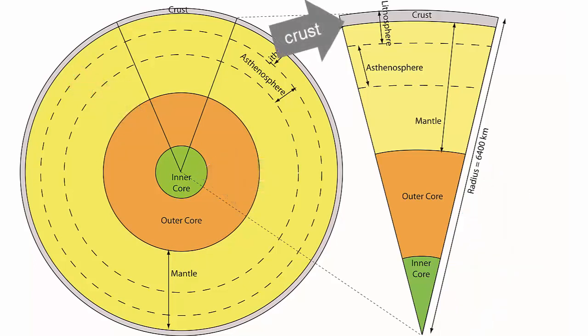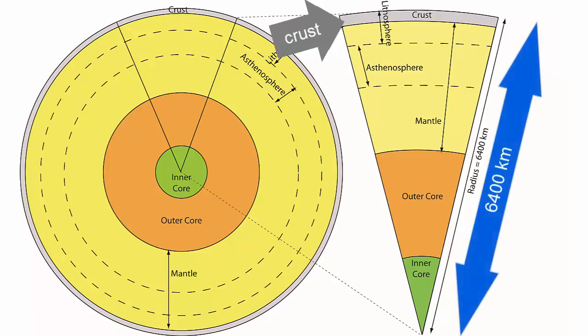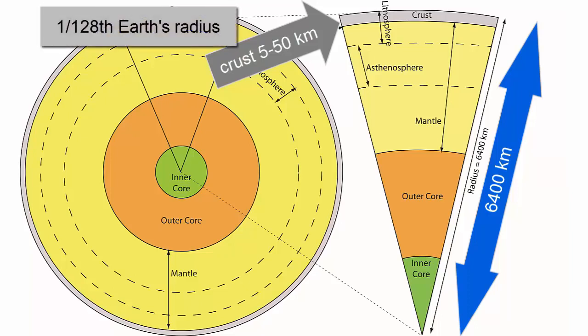Now, let's go out to the crust, which is so thin that it would be impossible to see it in any whole Earth drawing shown to scale, so in all cases we have to exaggerate it. The Earth has a radius of about 6,400 kilometers. The crust is at most 50 kilometers thick — at most 1/128th of the radius of the Earth.